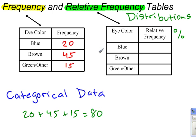And now I want to turn these frequencies into relative frequencies. So for the blue eyes, I have 20 out of 80. And we should know that 20 out of 80 gives us 0.25. So we could write this as 0.25 or we could write it as 25%. Either way is okay.